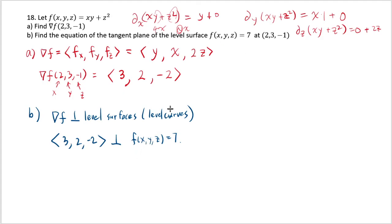And because the gradient at this point is 3, 2, negative 2, this gradient will be perpendicular to this at this point. And that's perfect because since this is perpendicular to the surface, it will also be perpendicular to the tangent plane of this thing at 2, 3, negative 1.